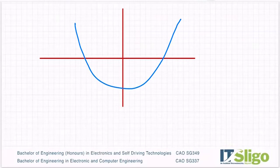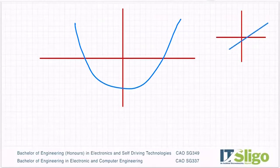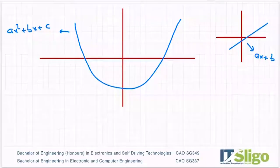I could draw another type of function over here called a linear function. So for the quadratic: ax squared plus bx plus c, and for the linear: ax plus b. We also have exponential functions, cubic functions, and so on and so forth — there are loads of them.